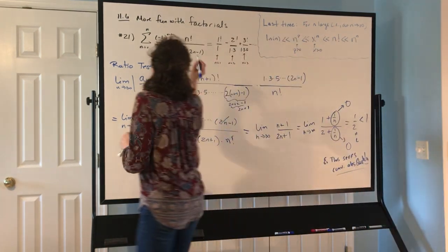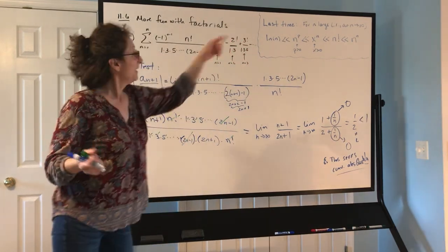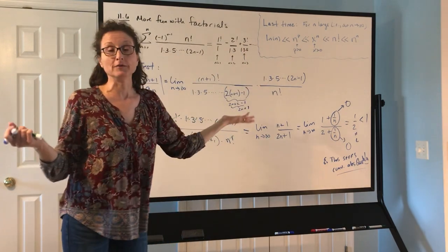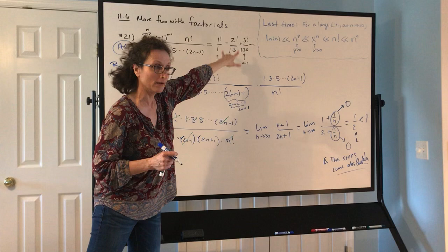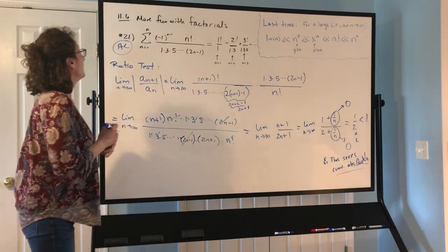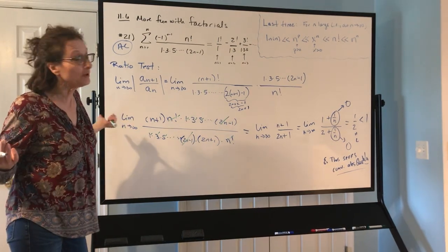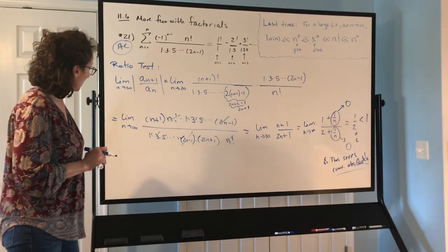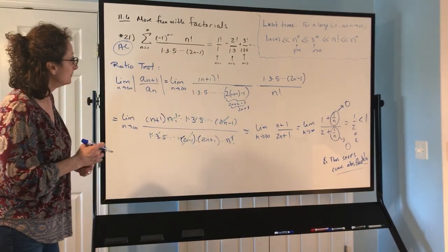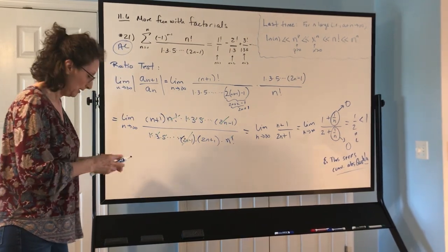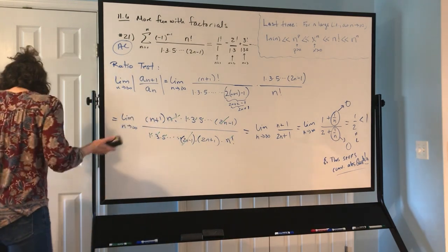What does absolute convergence mean? If we change all the negatives to positives, that series converges. And if we've proved the series with all positives converges, the original series with some negatives also converges — because absolute convergence implies convergence. The series with negatives converges to a different value, but we're just asking whether it converges, not what it converges to.